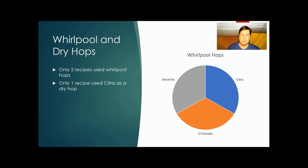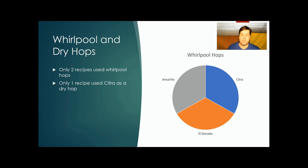Whirlpool and dry hops. Only two recipes used Whirlpool hops, and they were split between Citra, El Dorado, and Amarillo. One recipe had Citra as a dry hop.